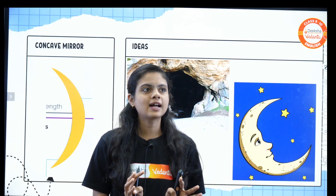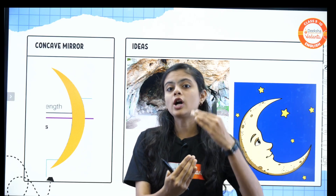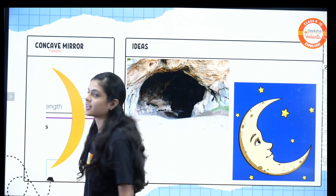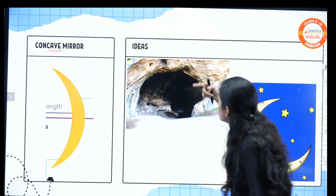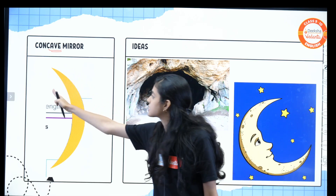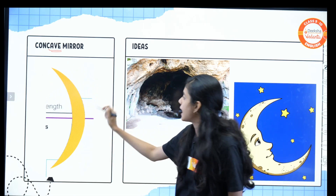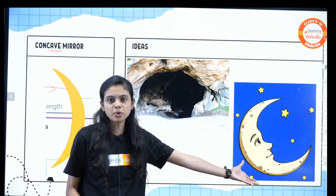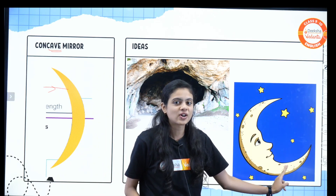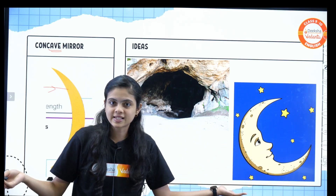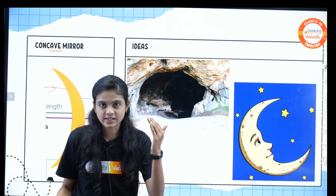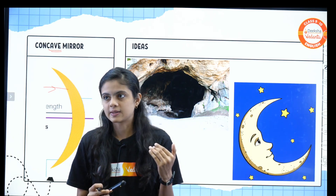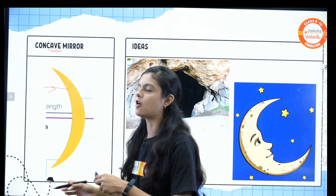In mirrors, concave mirror can be remembered with the example of a cave. The name itself suggests a cave-like structure — curved inward. The reflecting surface is also inward. You can also remember it with the moon: the inner surface of the moon is concave, and the outer bulged surface is convex.